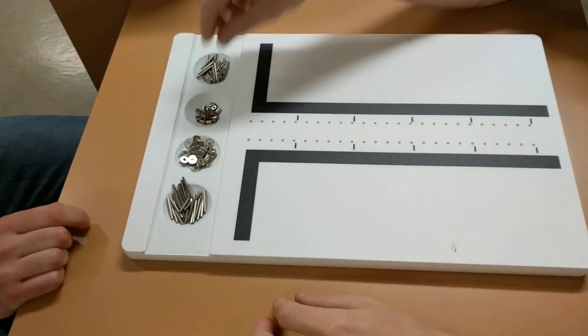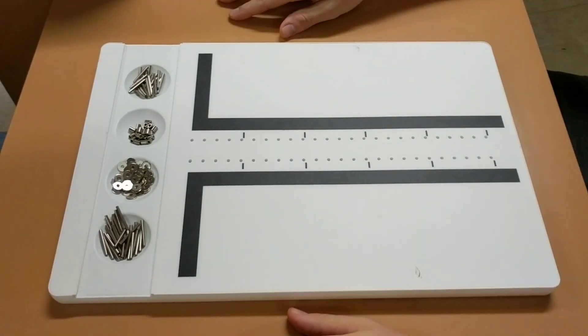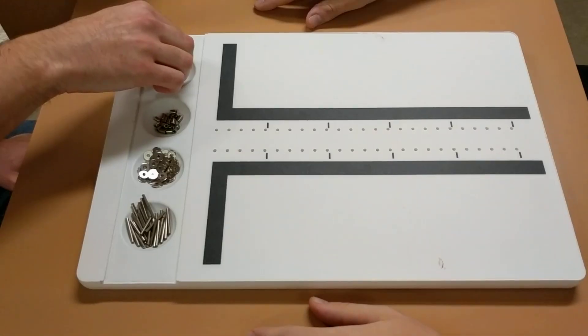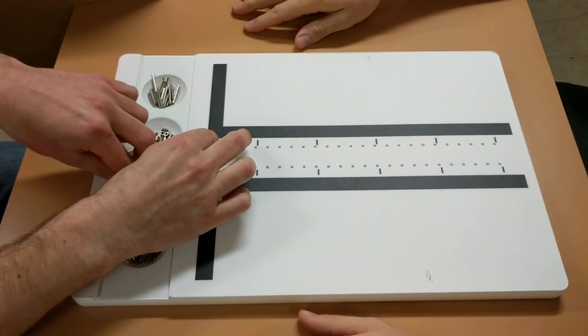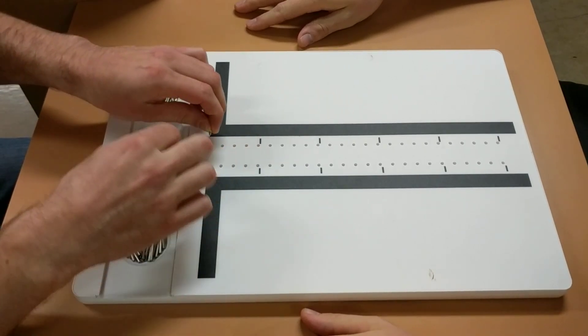Okay, for the final task, we're going to do assembly. While you're using one hand, you're going to take this peg and put it in there. At the same time, you're going to be grabbing a washer and putting it on.